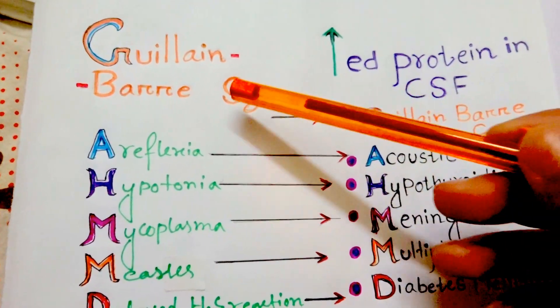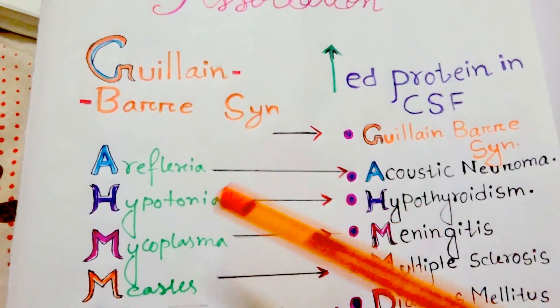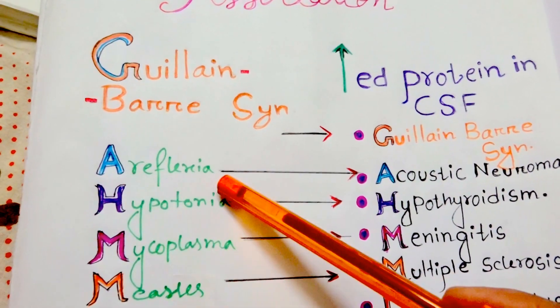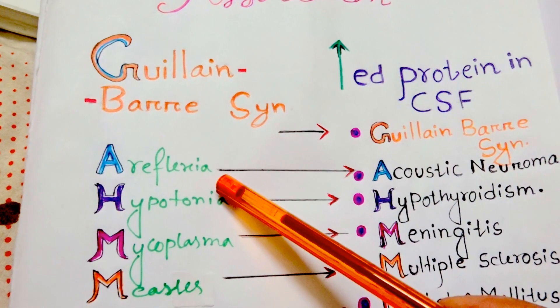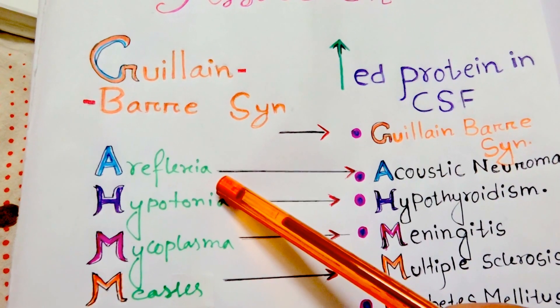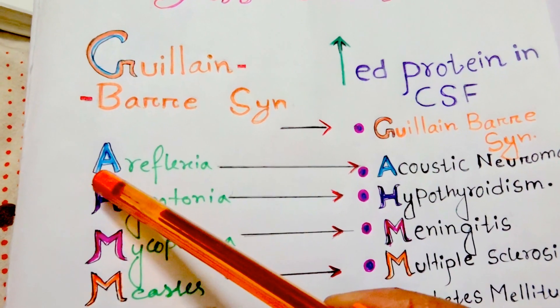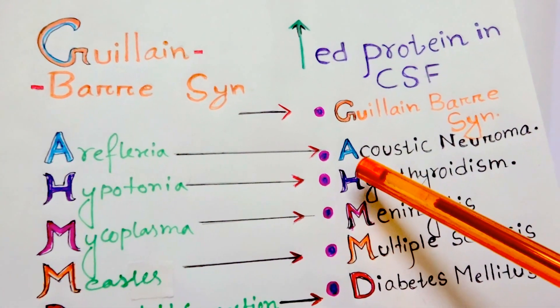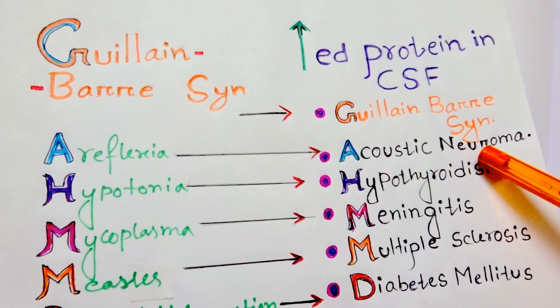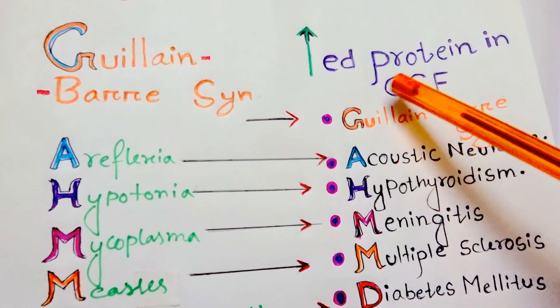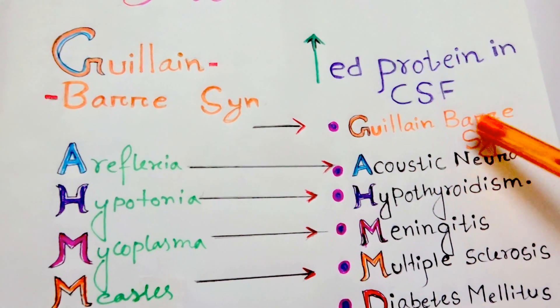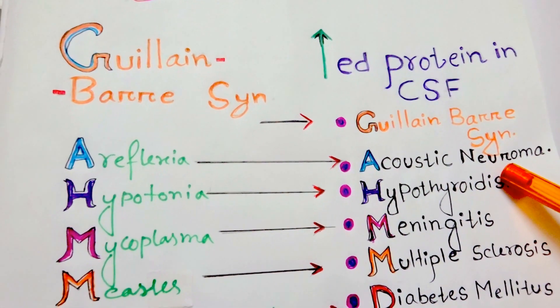In Guillain-Barré syndrome, there is A-reflexia, that is loss of reflex. By 'A', it is acoustic neuroma — the second cause of increased protein in the CSF.